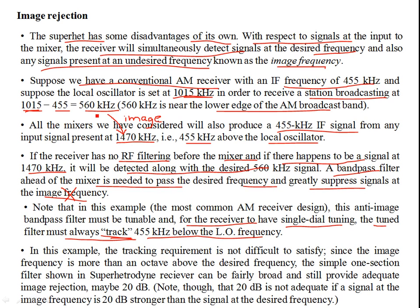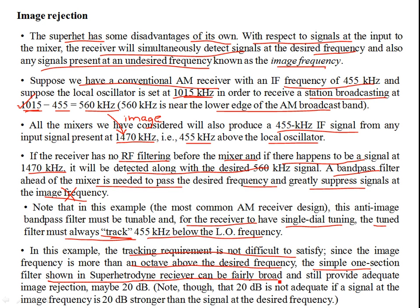For example, if you desire the 560 kilohertz station, the center frequency should be tracking the lower end of the local oscillator frequency. Since 560 kilohertz is lower than 1015, the bandpass filter should suppress 1470. The center frequency of the bandpass should be tuned such that it always tracks 455 kilohertz below the local oscillator frequency, so that the image frequency does not show up as an intermediate frequency. The tracking requirement is not difficult to satisfy here, since the image frequency is more than an octave above the desired frequency — a simple one-section filter can provide adequate image rejection of maybe 20 dB or so.